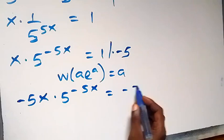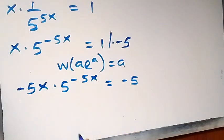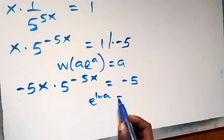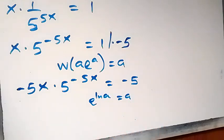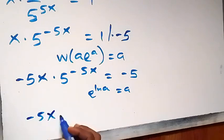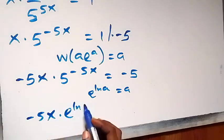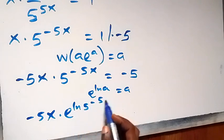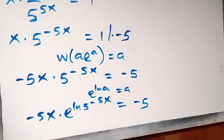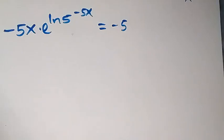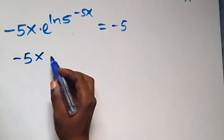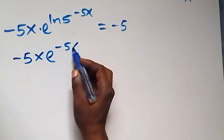Now equals to minus 5 on this side. From what we have here, when we have e^(ln a) that's the same thing as a. So 5 here can be written as e^(ln 5). And here we have minus 5x times e^(ln 5) raised to power minus 5x. Now equals to minus 5. Then from the law of exponents, minus 5x comes to the back: minus 5x times e^(ln 5).